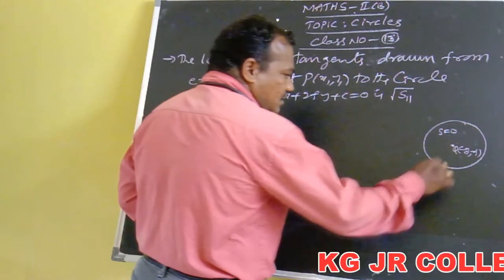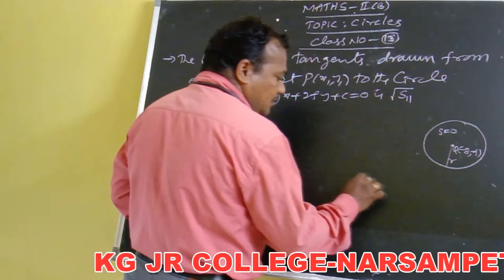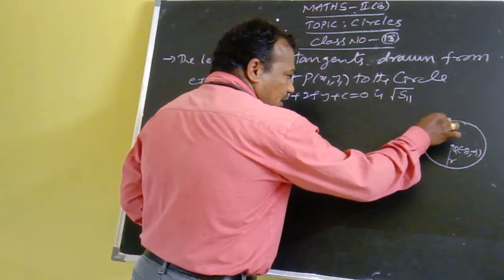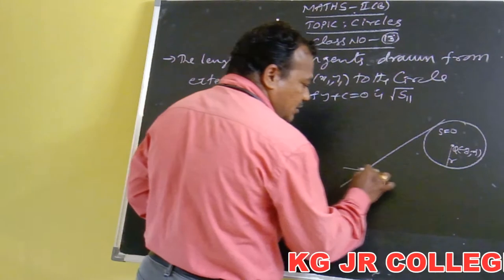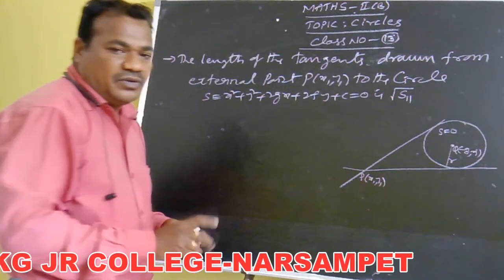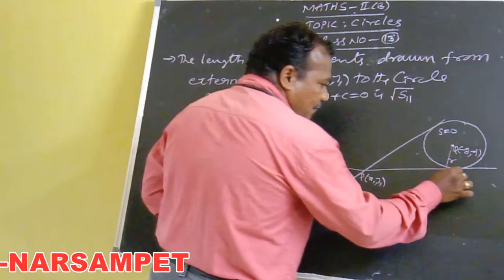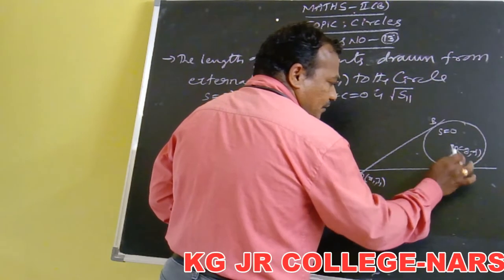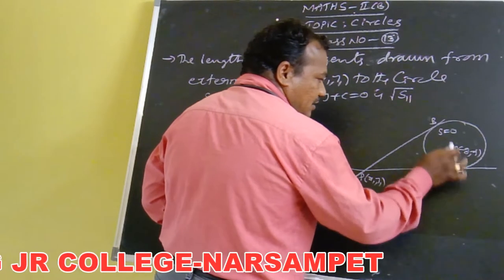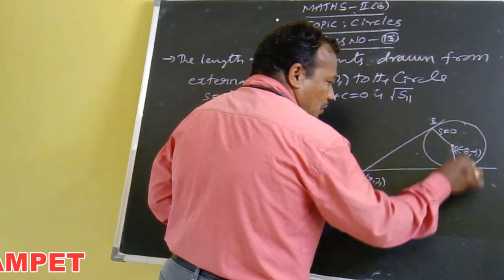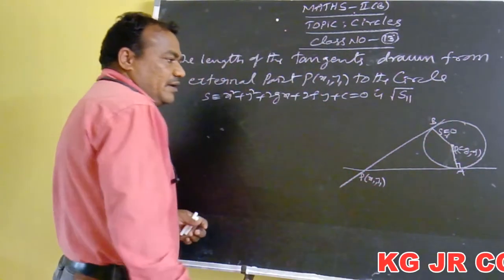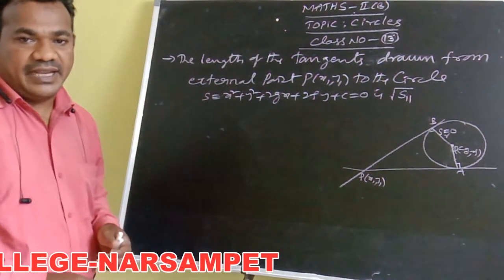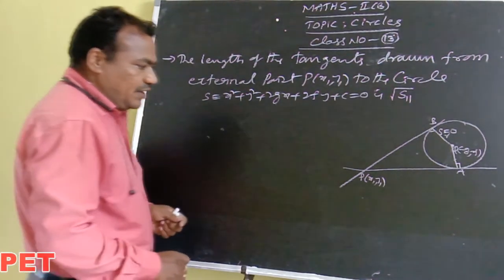Here P(x₁, y₁) is the external point to the circle. From an external point, it is possible to draw exactly two tangents. One is PA and another one is PB. QA and QB are both radii of the circle, where A and B are the points of contact lying on the circle. PA and PB are both the lengths of the tangents, and both are equal.